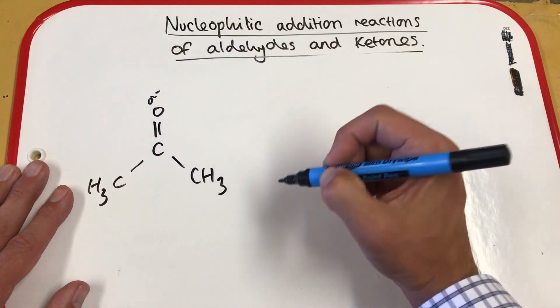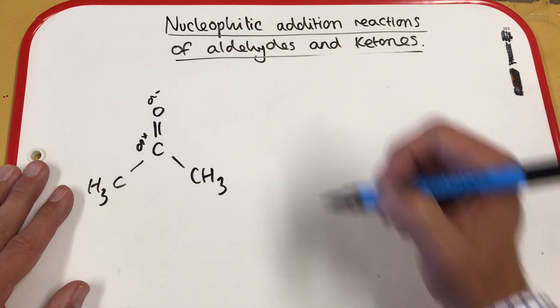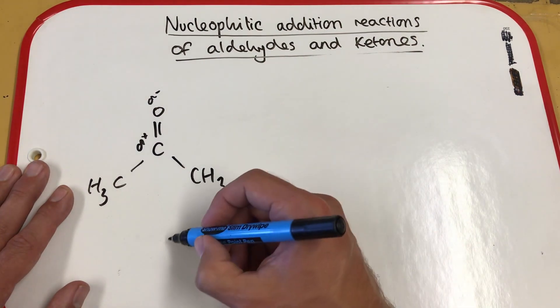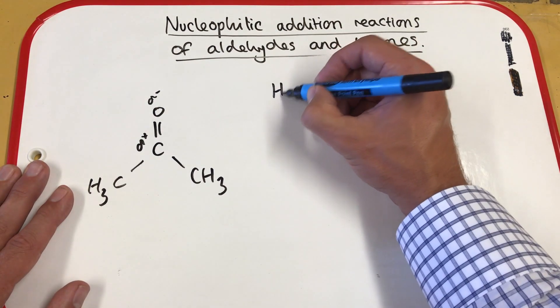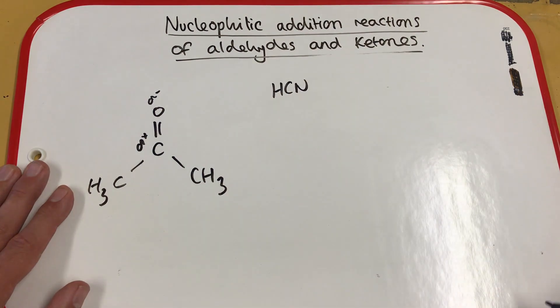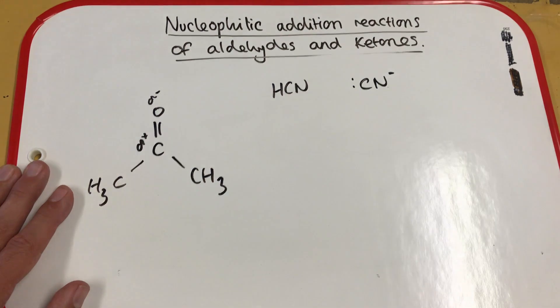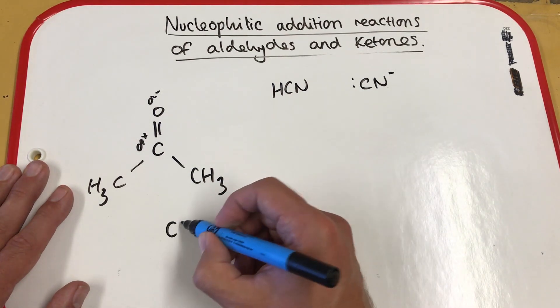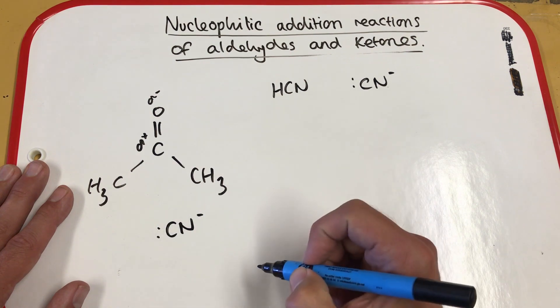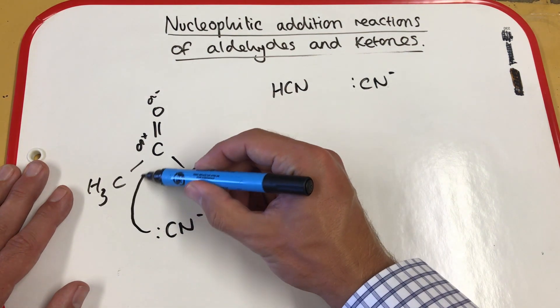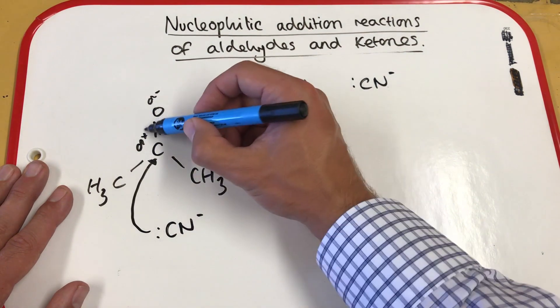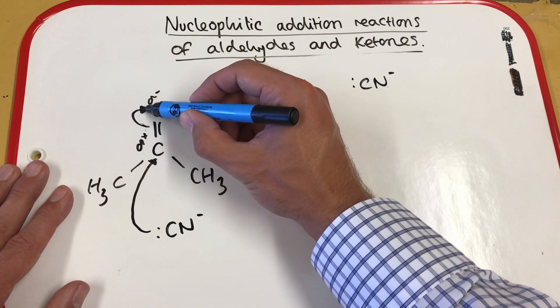Here we have delta-negative oxygen, delta-positive carbon. If we use hydrogen cyanide, we've got ourselves a source of cyanide ions to act as our nucleophile in this reaction. So here, the cyanide ion is the nucleophile, donating a pair of electrons to the carbon, pushes the electrons towards the oxygen.